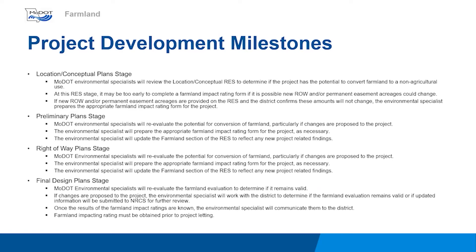If impacts to or conversion of farmland have not yet been evaluated at the time the district submits the RES for the preliminary plan stage and/or for the right-of-way plan stage, the Environmental Specialist will determine if the project will convert farmland. If so, the appropriate farmland impact rating form will be prepared and submitted to NRCS. The Environmental Specialist will provide the district with any new project-related findings via the RES response and discuss appropriate actions with the project manager if necessary. If new right-of-way and/or permanent easement acreages are still not fully known, the Environmental Specialist will reassess impacts to farmland at the next RES stage.